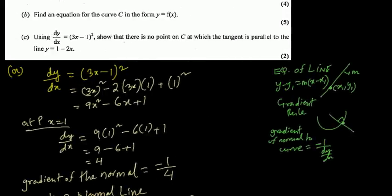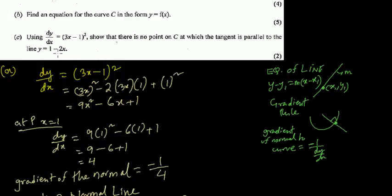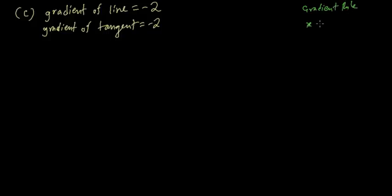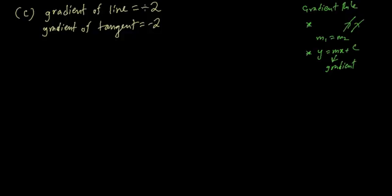Since the tangent is parallel to this line, the gradient of the tangent must also be -2, because parallel lines have equal gradients (m₁ = m₂). From the equation y = mx + c, the coefficient of x is the gradient, so gradient of tangent = -2.